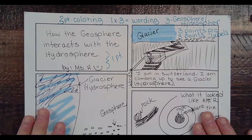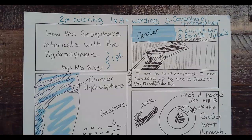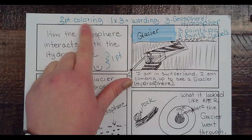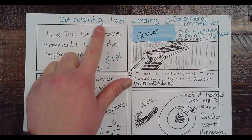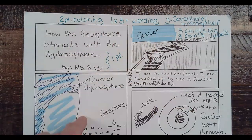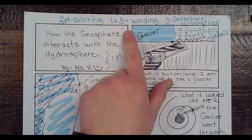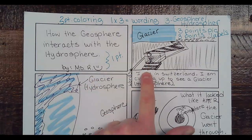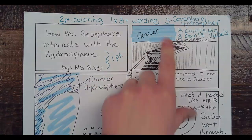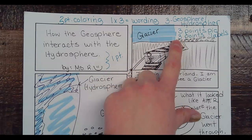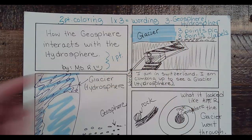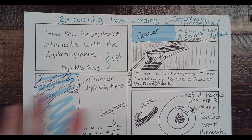Anyway, so glacier — I said three points for coloring. Each colored box is worth one point, and I like it to look nice. The wording in each box is also worth one point. You need to use the words 'geosphere' or 'hydrosphere,' and that's each worth one point.